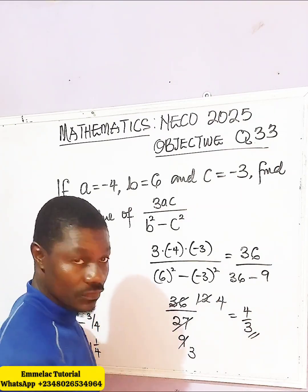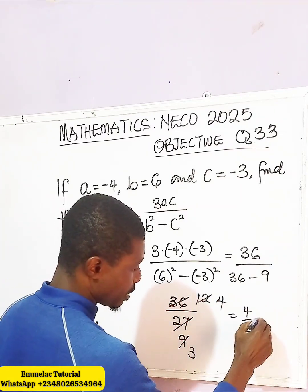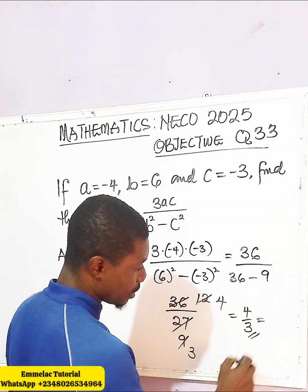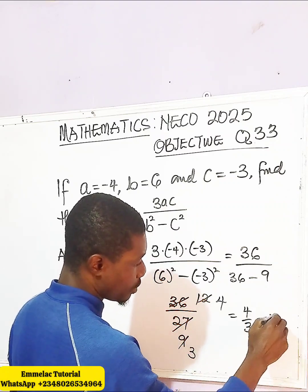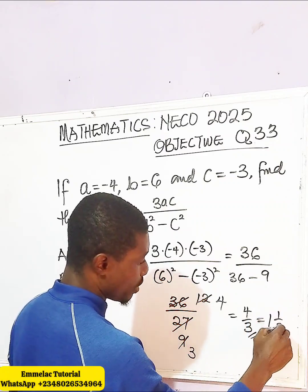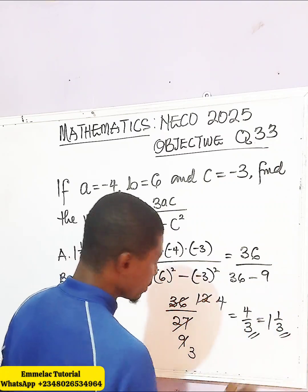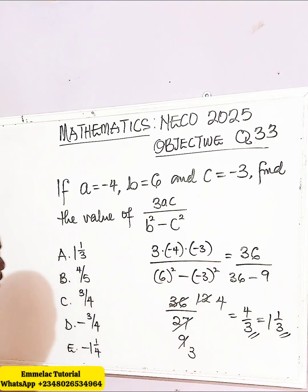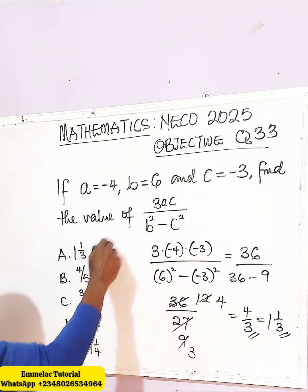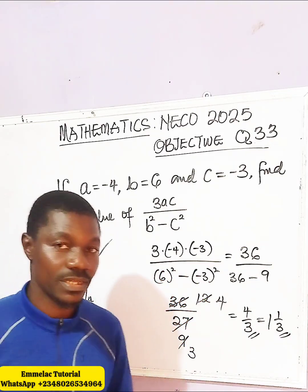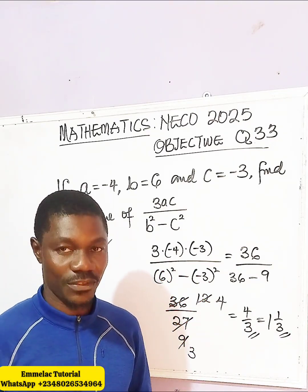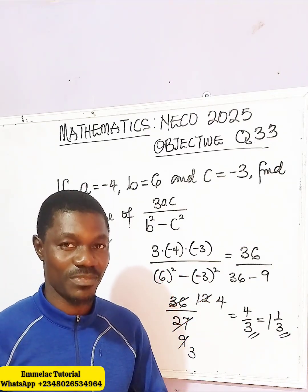So here, if you simplify this further, you should get 1 over 3. The final answer is 4/3. Thank you and God bless you.